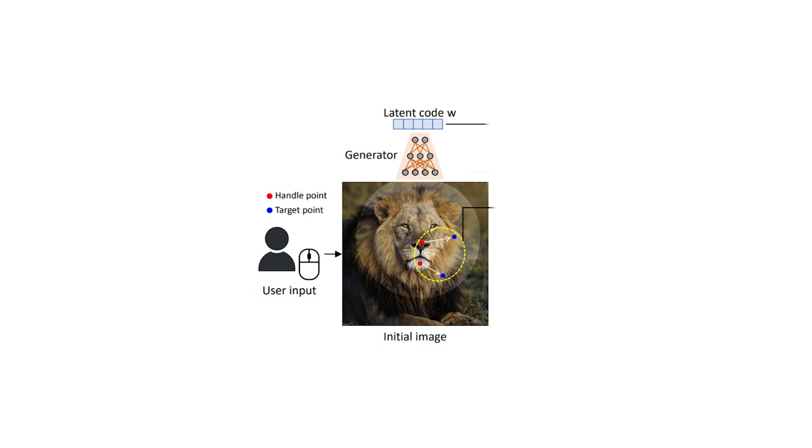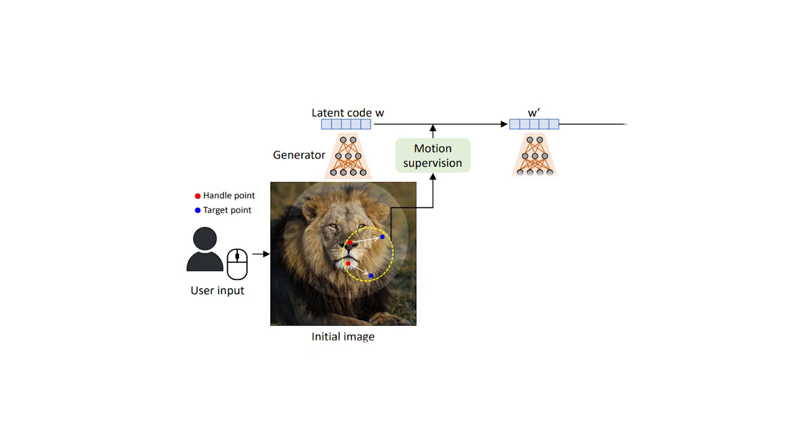For each new target point, the model's first step is to take the current image and move its representation in the feature map towards the right point, giving us a new latent code which we can use to generate a second image. Here we should see a slight movement in the image.